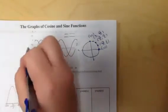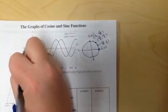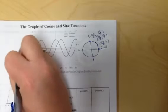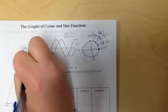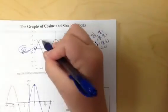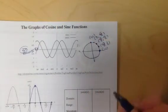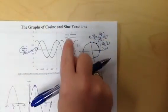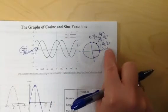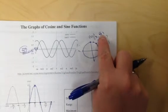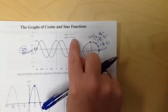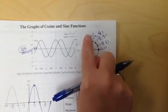When we graph them, theta is going to be in radians. The points we get are going to be based off the trig function we use. If we're talking about sine, we're going to use the y parts of the ordered pairs. If we're talking about cosine, we're going to use the x parts of the ordered pairs.